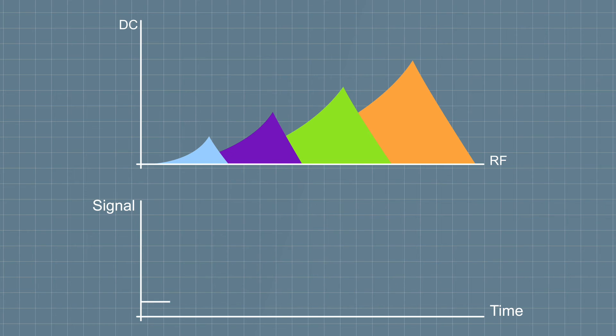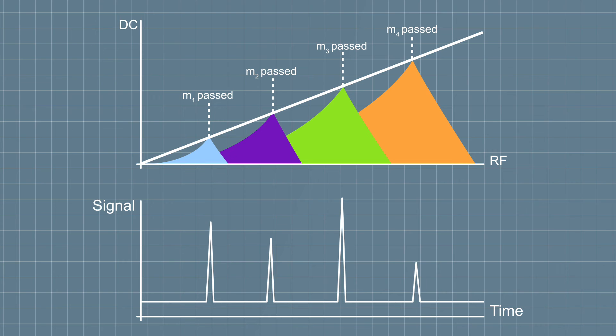We can also increase the DC to RF ratio to the point where the scan line crosses the very tips of the stability regions. As you can see, as we do that, the peak widths are reduced, therefore the resolution is increased. As we attempt to operate a quadrupole at higher and higher resolution, the transmission reduces because the entry conditions become more and more stringent. In other words, the ions must enter closer and closer to the central axis to make it through.